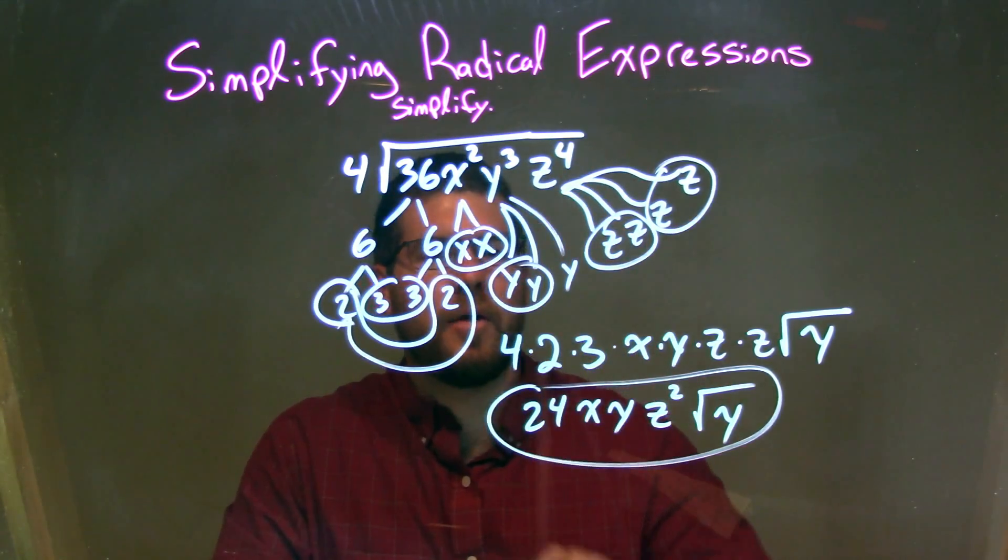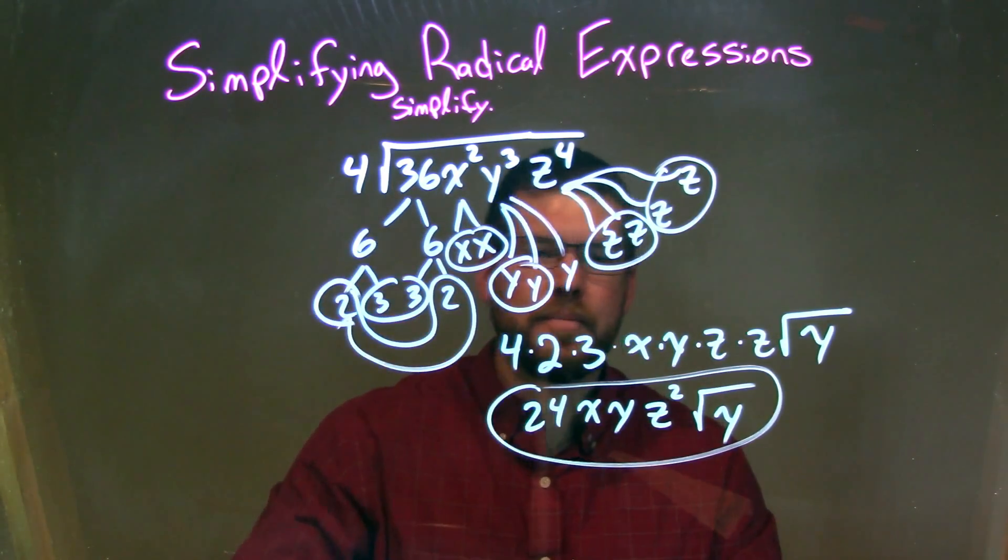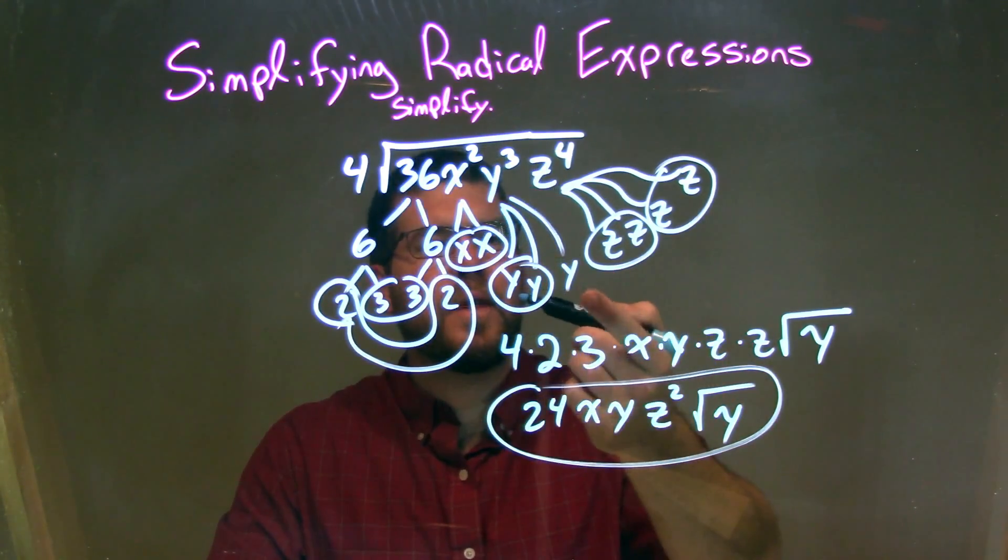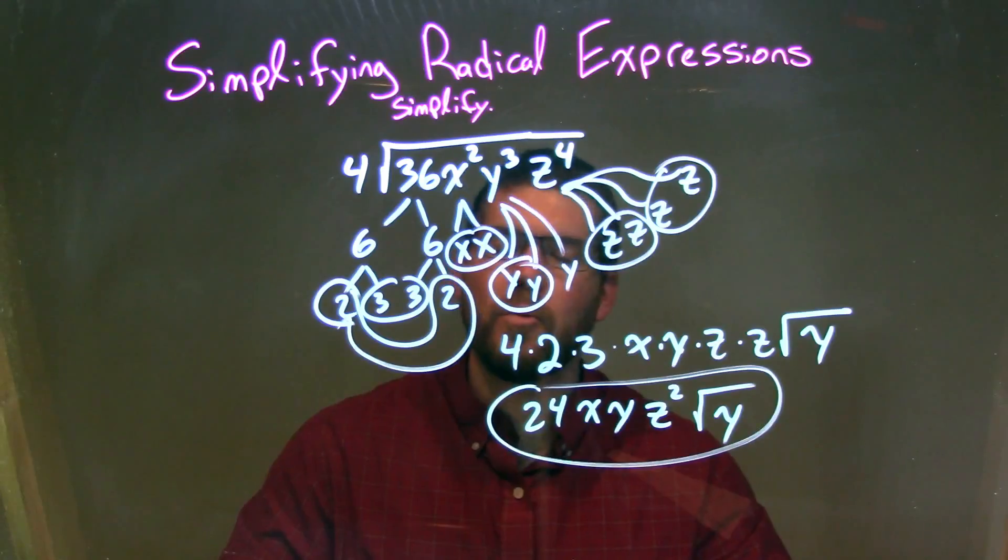They're represented by singles on the outside, and we keep multiplying by the 4. So we have 4 times 2 times 3 times x times y times z times z, and the only one that was not paired stays inside the square root, which is just the y.